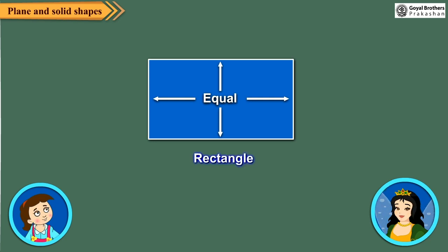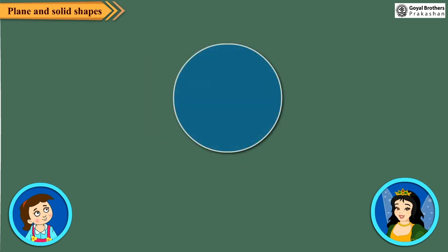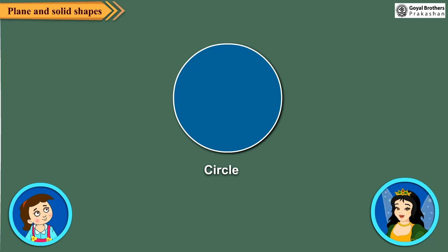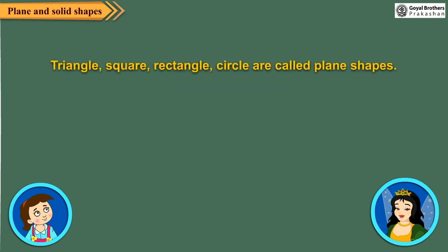Do we have any shape made up of curved lines? Yes, Neha. We have shapes made up of curved lines also. Look at this shape. It is made up of a closed curve. It has no corners, and this is called a circle. One more thing I would like to tell you, Neha — these shapes like triangle, square, rectangle and circle are called plane shapes.